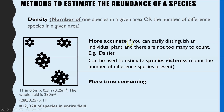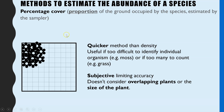Density is more accurate in comparison, but only if you can easily distinguish individual plants and there aren't too many to count — daisies are a good example. You can also use density if asked to estimate species richness, which is how many different species there are in a given area at a given time; in that case you count how many different species are in your quadrat. The downside is it is more time consuming.